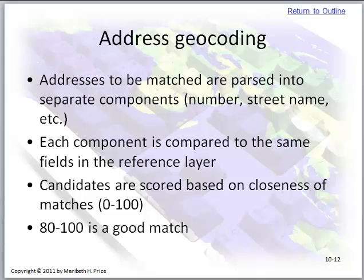Addresses can be matched or parsed into separate components, such as name, street name, etc. Each component is compared to the same fields in the reference layer, and they're given a score of 0 to 100. We'll be looking for around an 80 to 100% match.